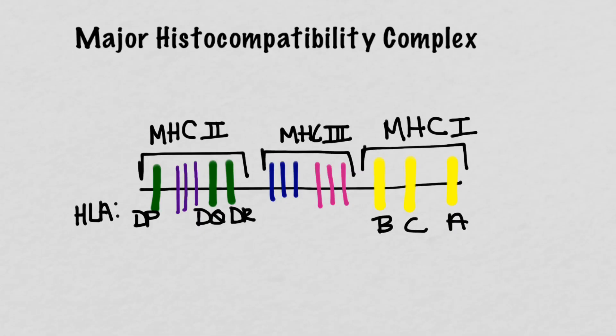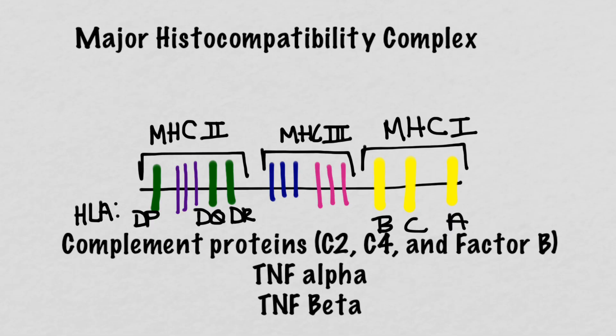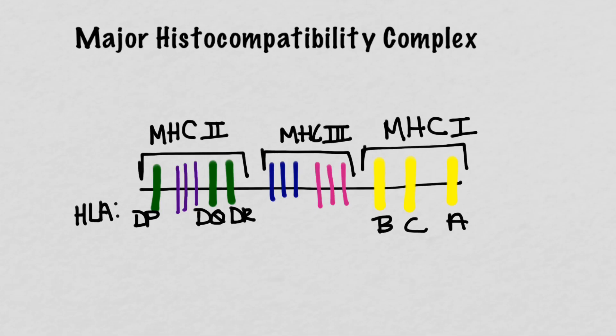Let's take the MHC molecules by class, starting with MHC class 3. We can largely ignore the MHC class 3 molecules. They are named MHC molecules because they're grouped in the same genetic region as the other MHC genes, but they don't actually have anything to do with antigen presentation. They include things like complement proteins C2, C4, and factor B, and the TNF-alpha and TNF-beta genes. These genes have absolutely nothing to do with antigen presentation, so as far as MHC is concerned, it is all about antigen presentation — and I shall never speak of class 3 again.